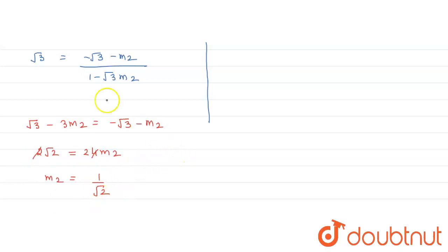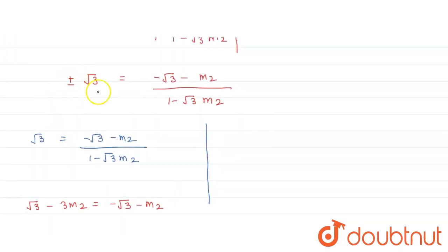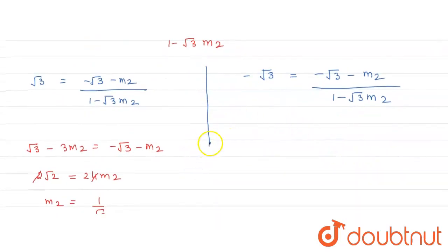Now this is the case when we are taking the positive sign. Now if we take the minus sign, minus root 3 equals minus root 3 minus m2 upon 1 minus root 3 m2. Now again cross multiply.